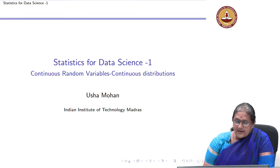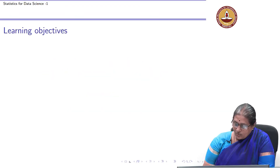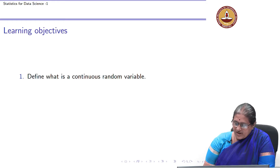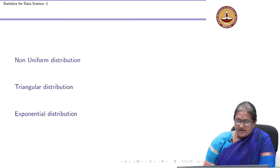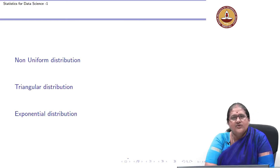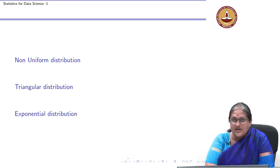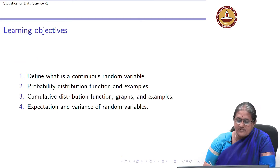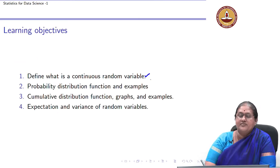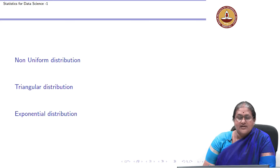We are going to look at another 2 or 3 naturally arising distributions. We will first look at a non-uniform distribution — we have already looked at uniform distribution — then a triangular distribution, and then we will spend some time understanding the exponential distribution. As in every case, we will find out the random variable, the PDF, the CDF, and the application.